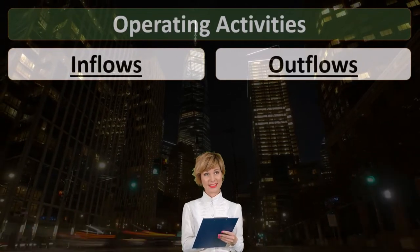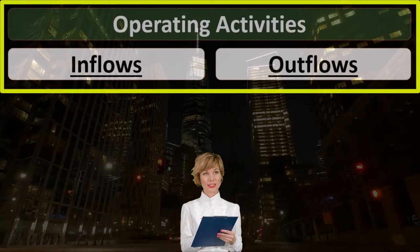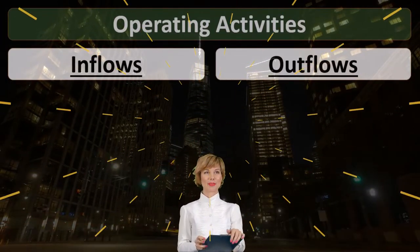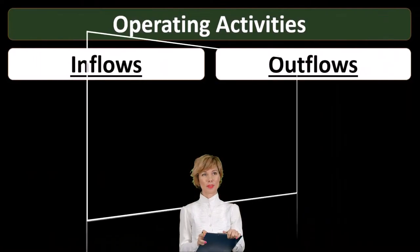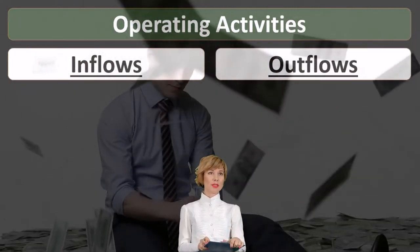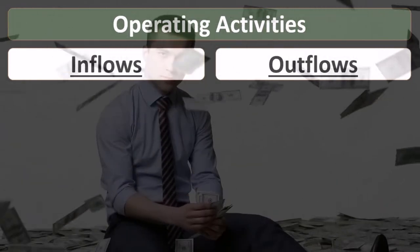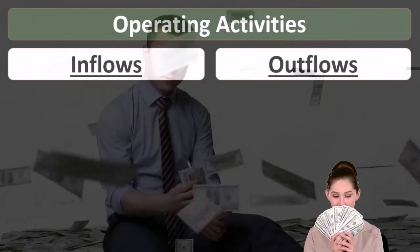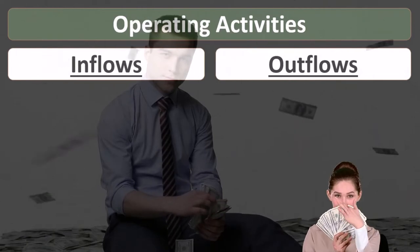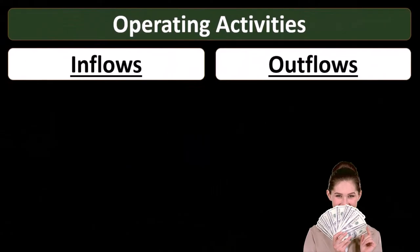Before we go into the list of inflows and outflows related to operating activities, we want to know first that operating activities is going to be similar to thinking about the income statement on a cash basis. So when we think about operating activities, one way to think about it is: if we were to have the income statement on a cash basis, the inflows and outflows would basically be what's in the operating activities.